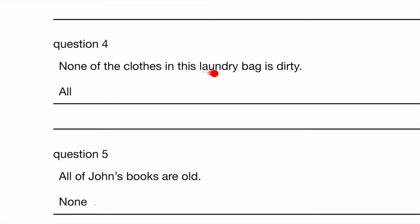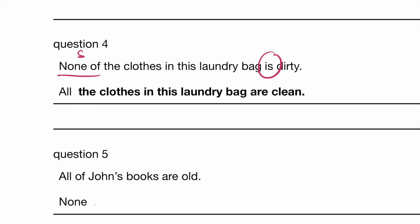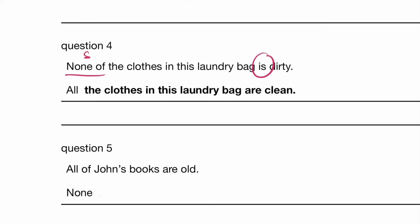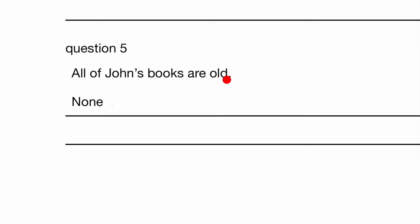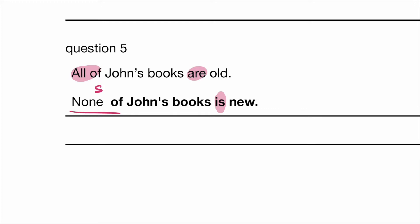Question 4: None of the clothes in this laundry bag is dirty. 'None of' is singular and 'is' is in present tense singular form. So: all of the clothes in this laundry bag are clean. That makes sense — if none are dirty, that's the same as all being clean. Using opposites here — antonyms, to be more specific. Antonyms are words with opposite meaning. Last question: All of John's books are old. All is plural, therefore 'are' is plural, in the present tense. All old is the same as saying none are new — so 'none of John's books is new.' 'None' is always singular, therefore 'is new.' Notice we are using the present tense still.